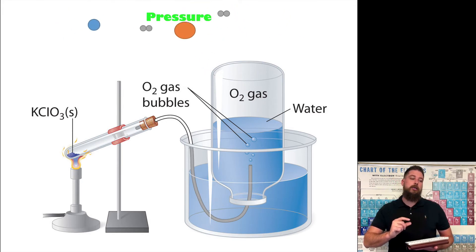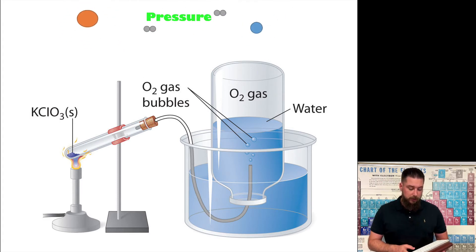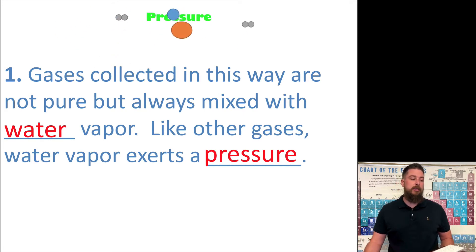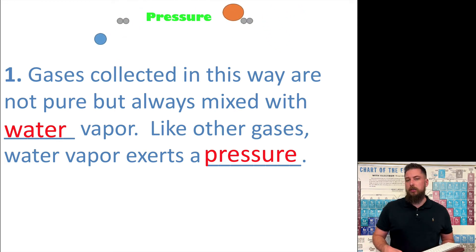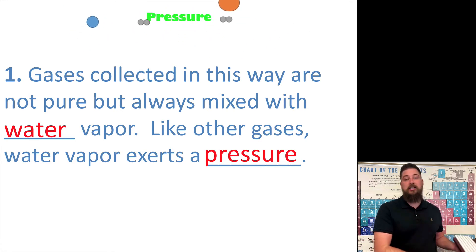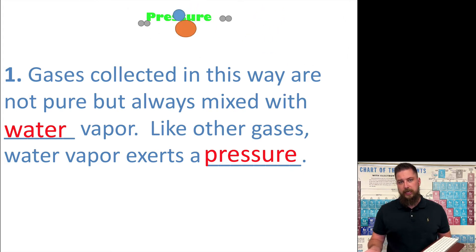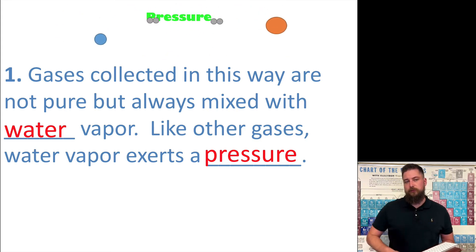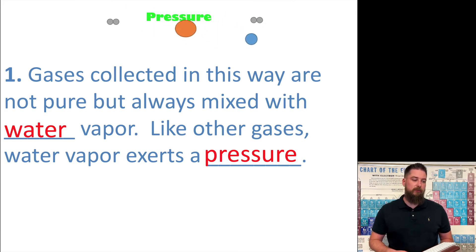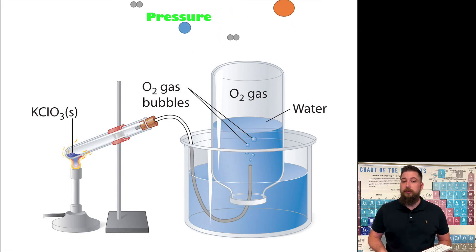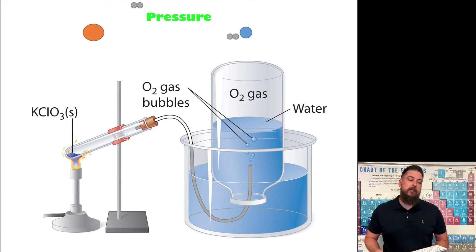As long as there's a little bit of water at the bottom, it prevents the oxygen gas from escaping. But here is the reality: the gas being collected is not going to be pure, because some of that water is evaporating within the container and providing its own pressure. So there's a mixture of the gas being collected and water vapor. Whenever you use this method to collect a gas, you're going to end up with a partial pressure for the oxygen gas and a partial pressure for the water, because the water is evaporating and providing its own pressure.